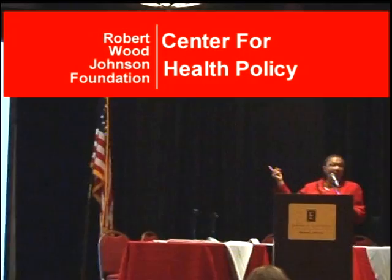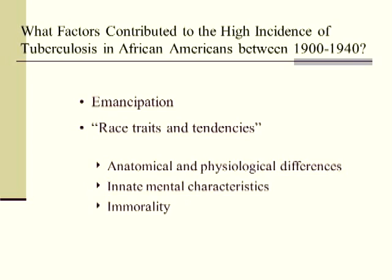Some people went so far as to say African Americans had higher tuberculosis rates because of emancipation. There's one person, Thomas Jefferson Mays, who said the way to deal with tuberculosis in Black people was to re-institute slavery — published in a medical journal. But the tuberculosis rates did increase after slavery because people were moving to cities, they were congested, and there was no healthcare. Hoffman talked about anatomical and physiological differences, claiming Black people were inferior — also mentally inferior and immoral — and he saw immorality as a race trait.